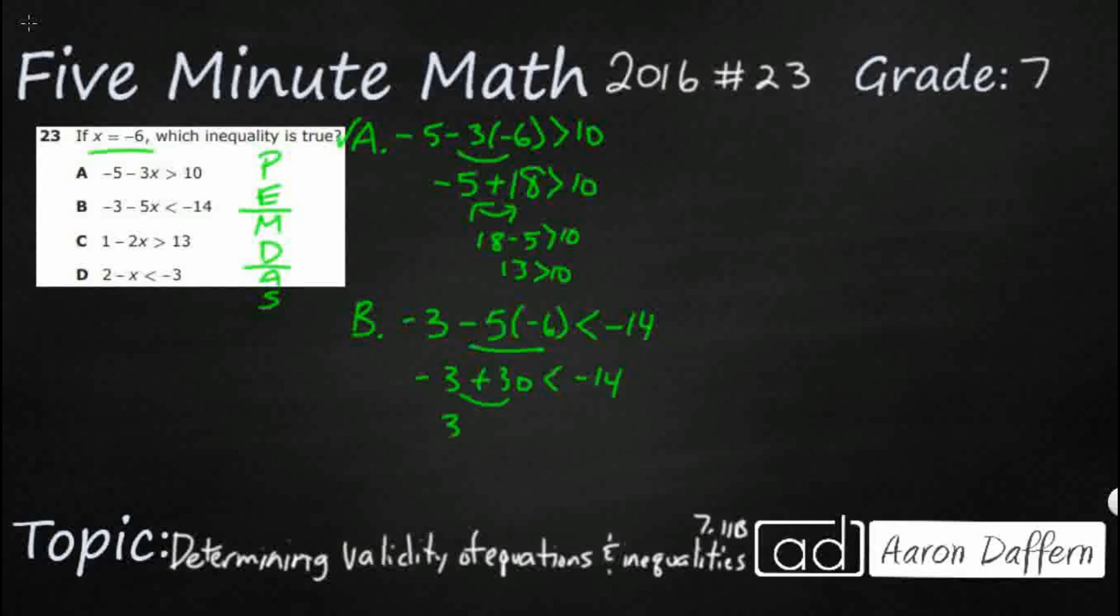I'm going to go ahead and do that commutative property again to flip those addends. And so I've got 30 minus 3, 27 is less than negative 14. So that does not work. It would work if it were greater than, but not if it's less than. So it's not B.